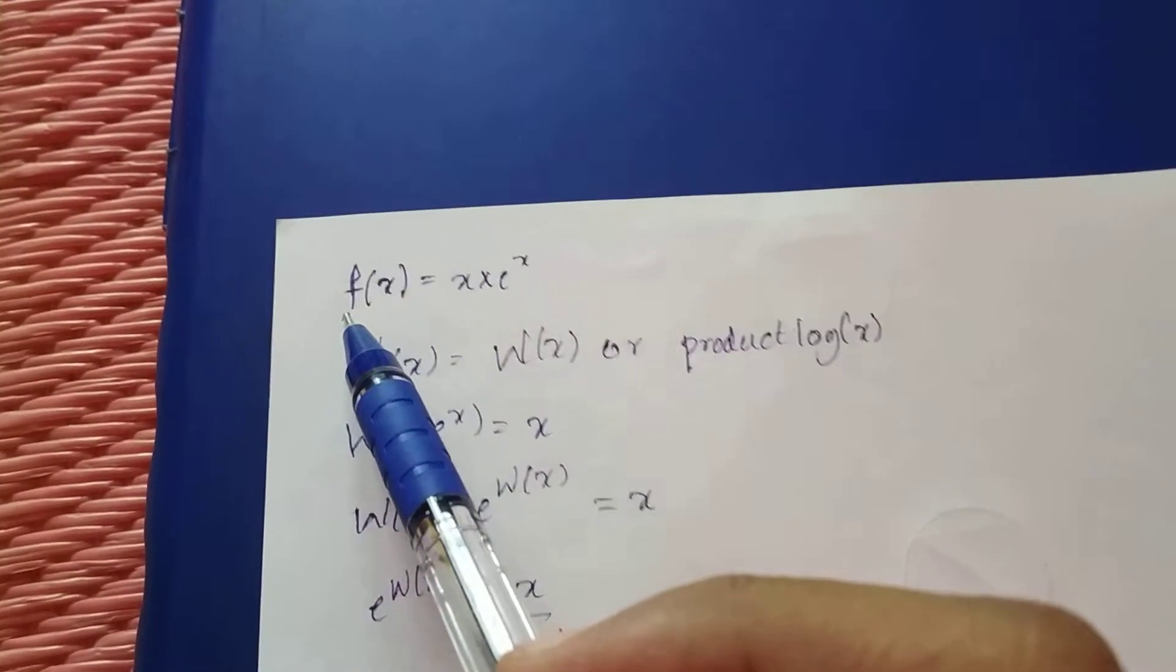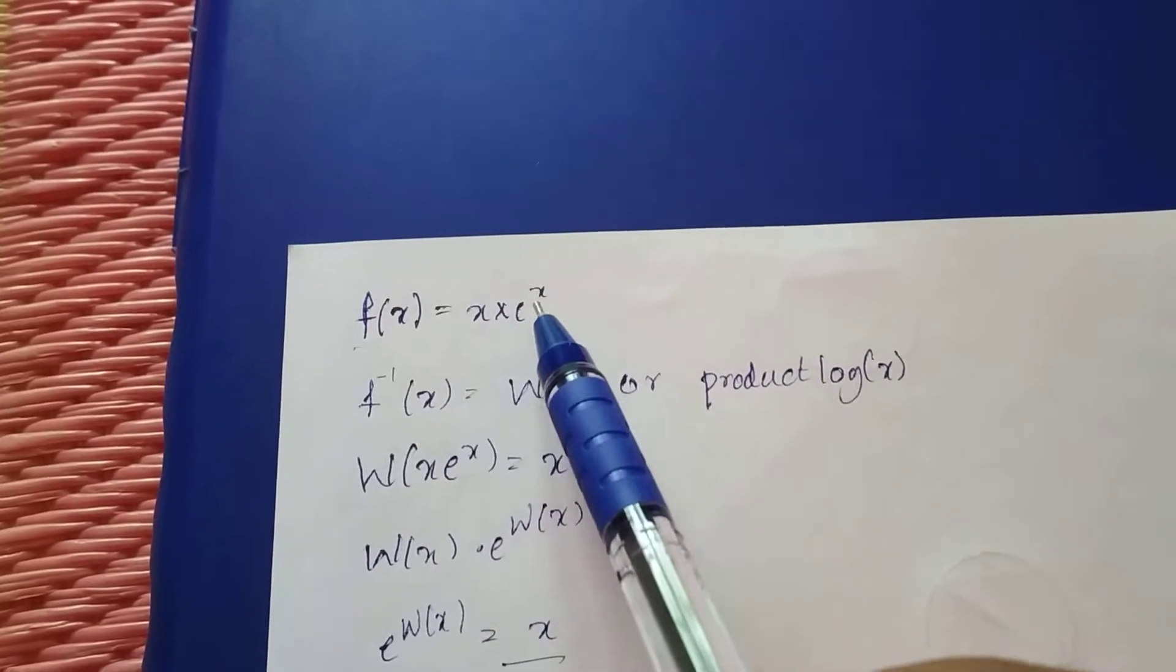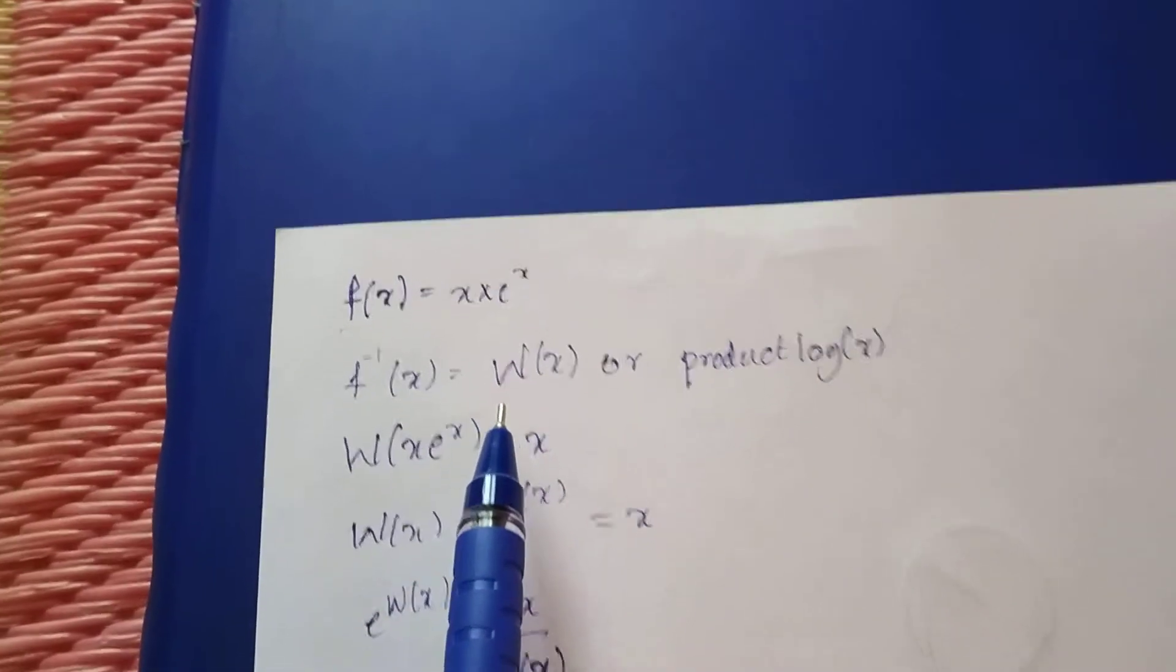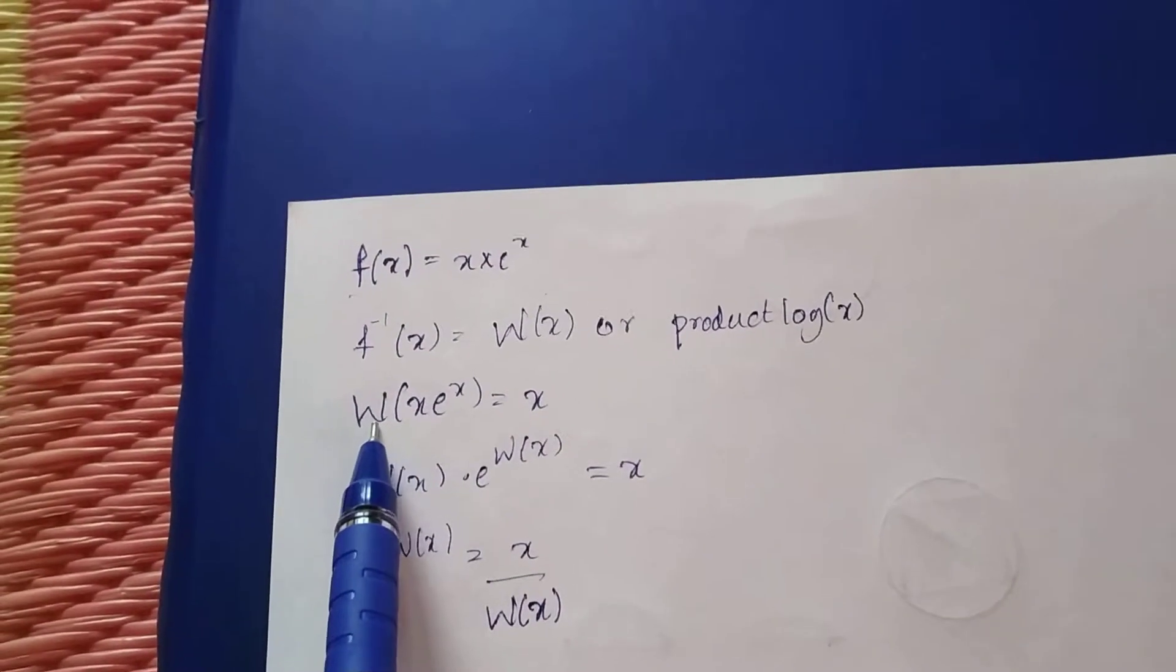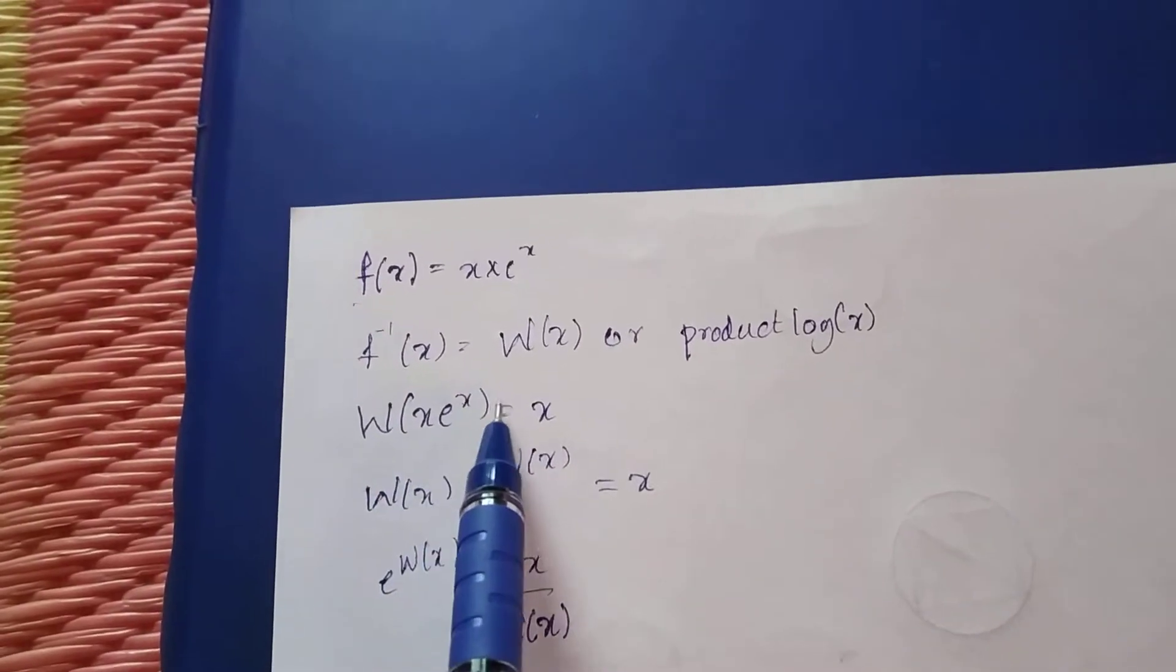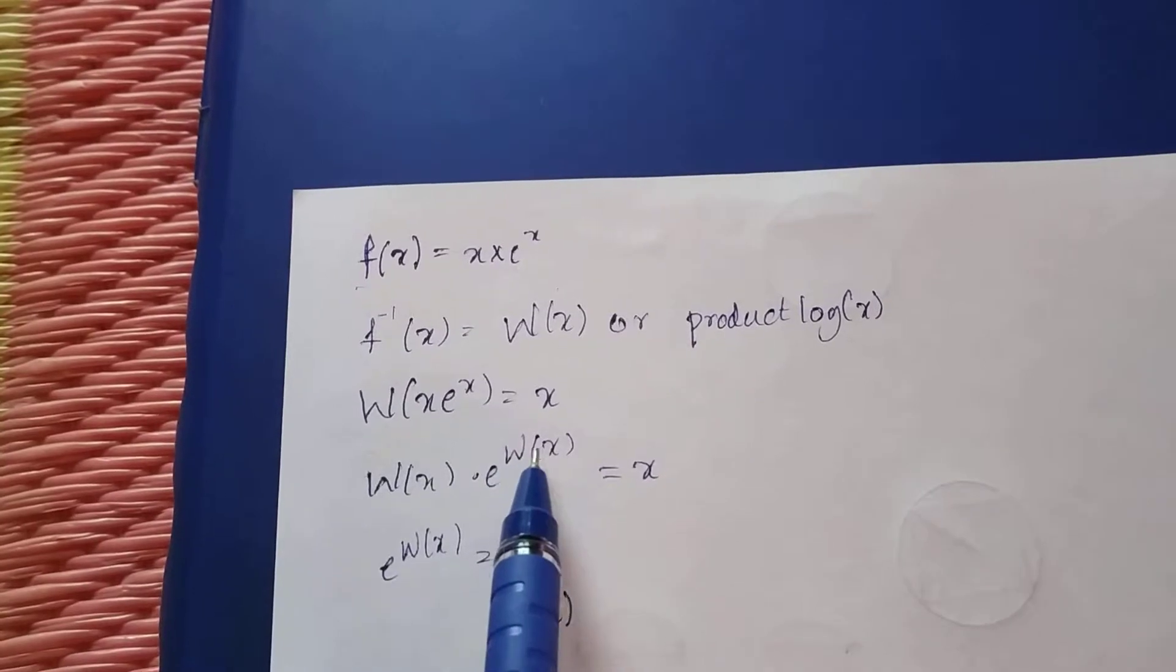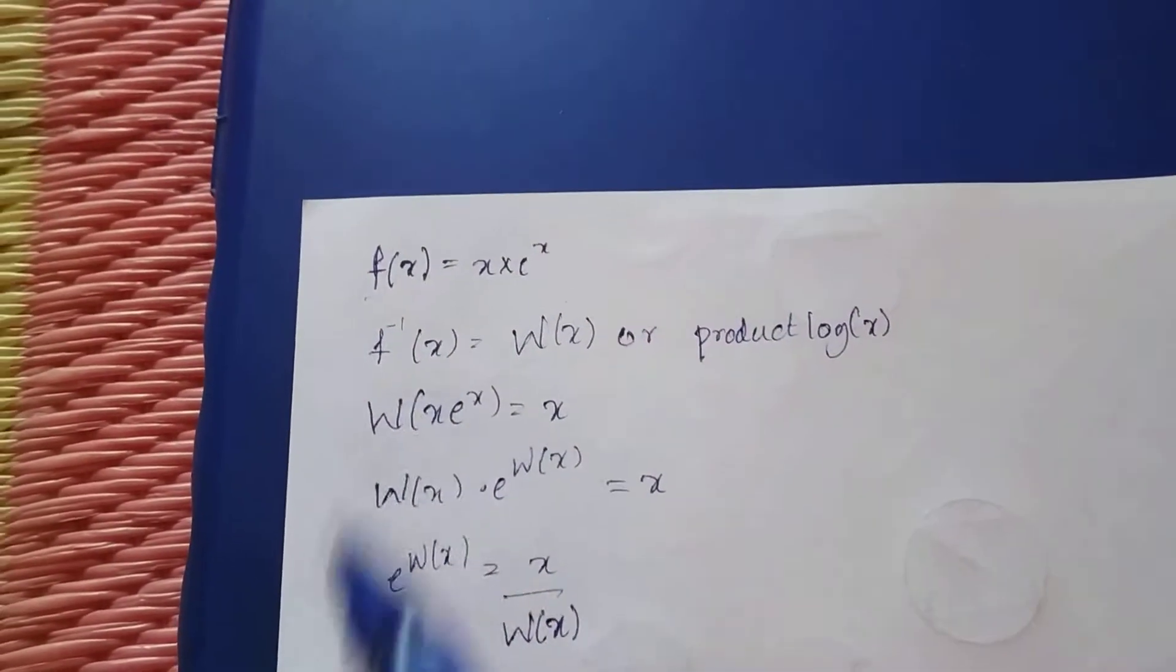The function is defined as f(X) = X·e^X, where e is Euler's constant. There are a few properties for this function, like Lambert W function for X·e^X equals X, and W·e^W(X) equals X.